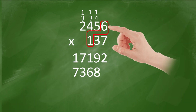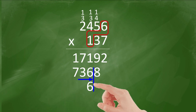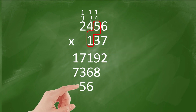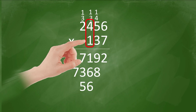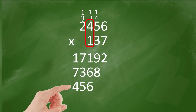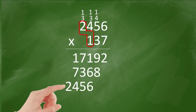1 times 6 equals 6. Now your answer is aligned here. 1 times 5 equals 5. 1 times 4 equals 4. 1 times 2 equals 2.